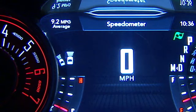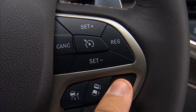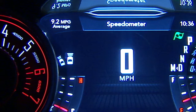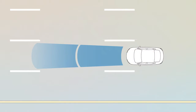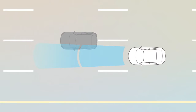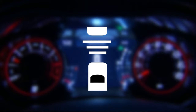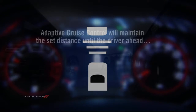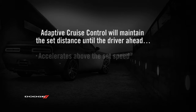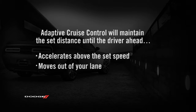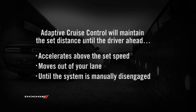The increase and decrease distance buttons let you change the distance between you and the driver in front of you. If there's no driver ahead, your set speed will be unaffected. But when a slower moving driver enters your lane, the system automatically adjusts your speed to maintain the distance setting. You'll see the sensed vehicle indicator icon in the instrument cluster. The system will maintain the set distance until the driver ahead accelerates above the set speed, moves out of your lane, or until the system is manually disengaged.